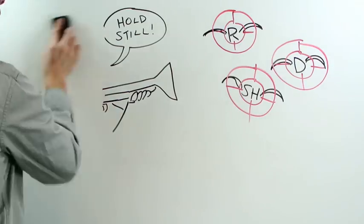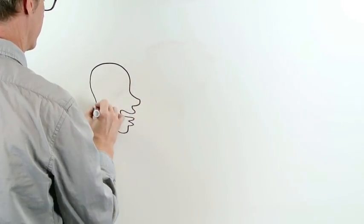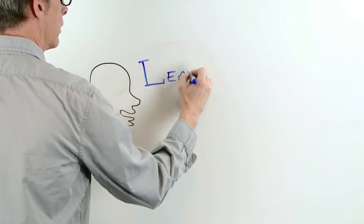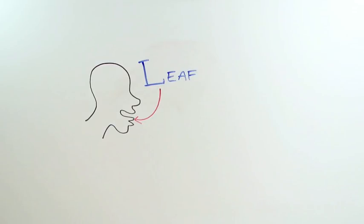The English L, for example, can be different depending on where it occurs in the word. At the beginning of a word like leaf, we use a light L, made with the tip of the tongue.